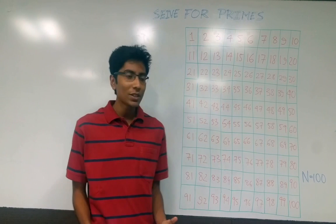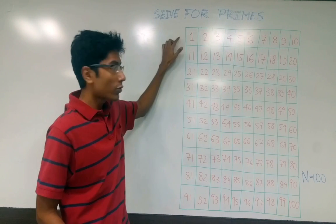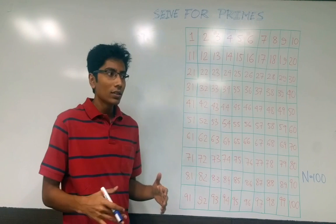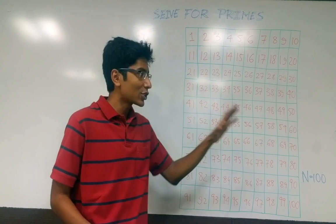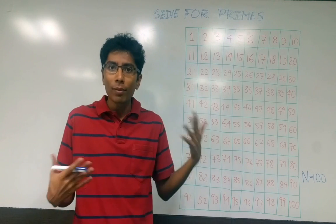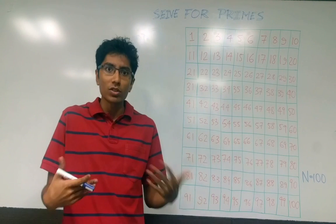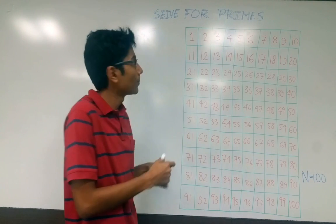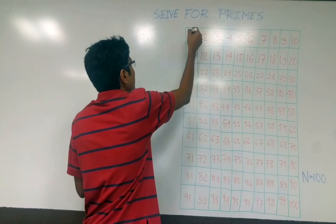To find all the numbers in this data structure we start from 1. But 1 divides everything, so taking 1 as a prime number won't make sense because every prime number is divisible by 1. So we ignore 1 — it's out of the list.